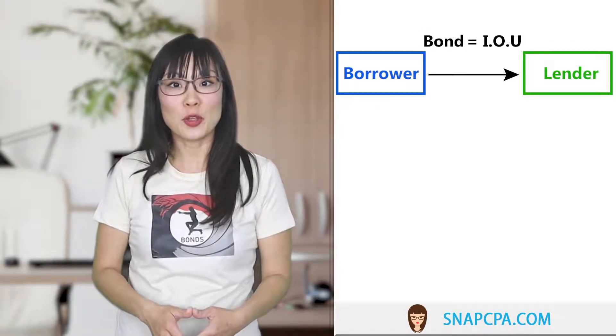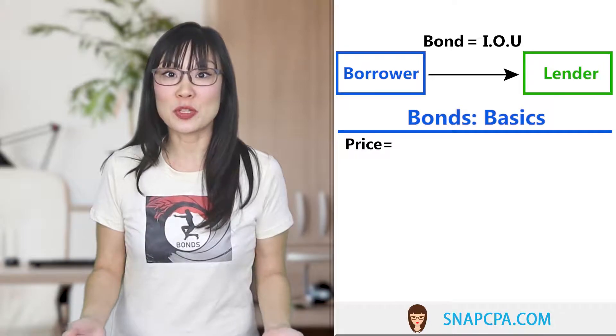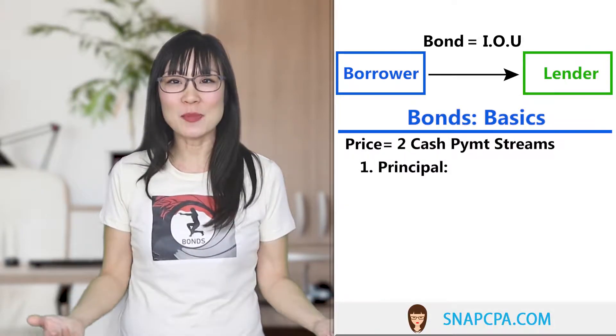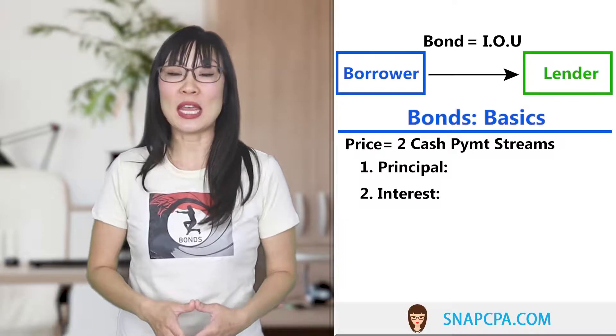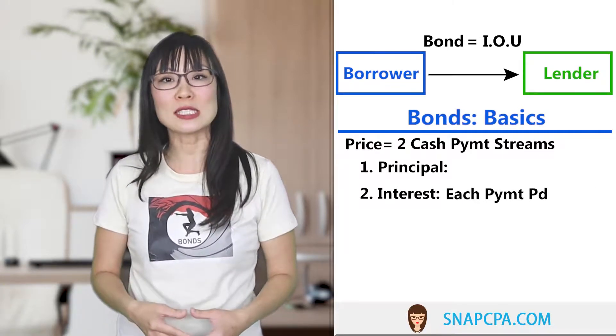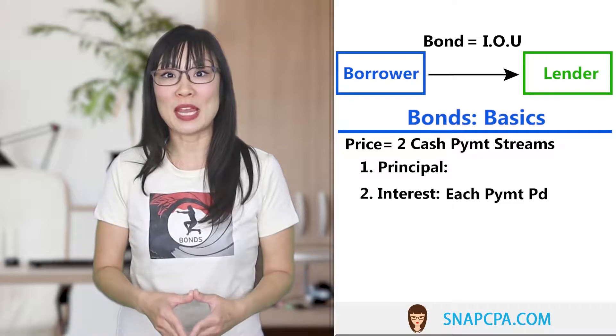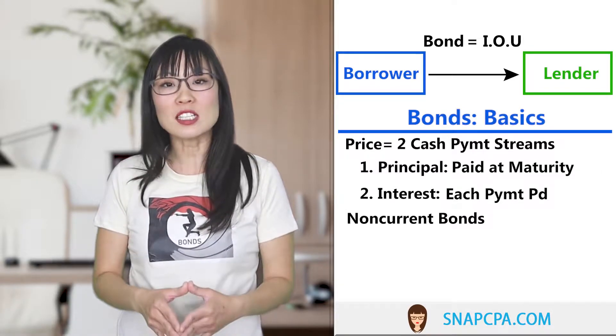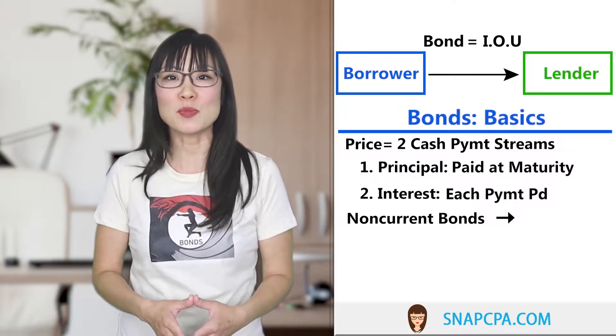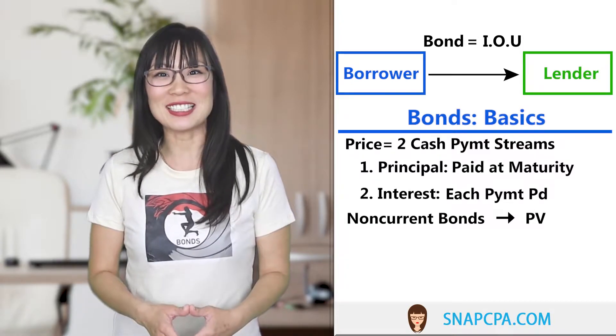To summarize: the borrower issues bonds, which is just a written IOU. When pricing the bond at issuance, remember there are two cash streams — principal and interest. The interest gets paid at the end of each period, usually annually or semi-annually. The principal gets paid at the end of the bond at maturity. If the bond is more than one year, it's considered non-current and must be present valued. For more practice on pricing bonds, take a look at the additional videos that price bonds with a premium and a discount. Next up we're going to review the effective interest method.